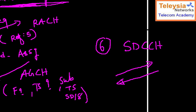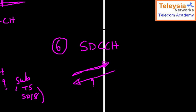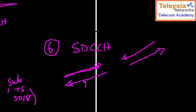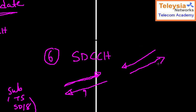The sixth step is to go to the SDCCH — the Stand-alone Dedicated Control Channel. When you are on the SDCCH, this is a bidirectional channel: it exists in both uplink and downlink. The network asks you questions and you provide answers. Finally, authentication is completed and ciphering is done. The detailed SDCCH transaction will be explained in the next chapter.